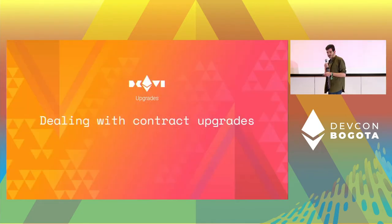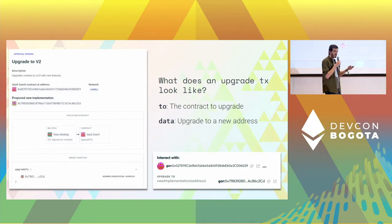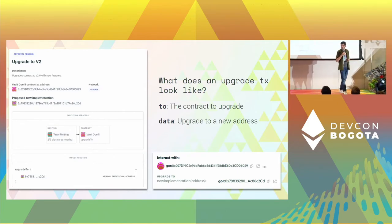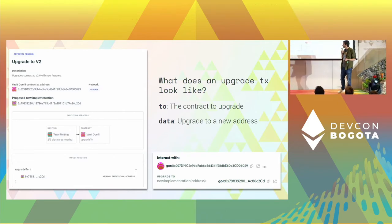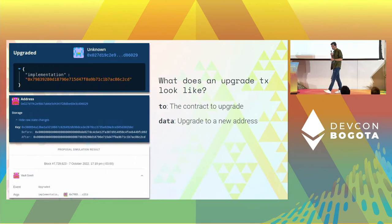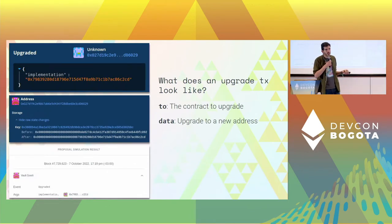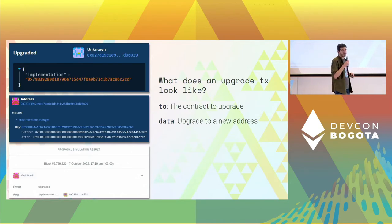Speaking of upgrades, these deserve a chapter of their own. An upgrade transaction usually looks like calling the contract and telling it to upgrade to a new address. The only information we have is literally an address. We can simulate it — the simulation will tell us that the implementation is moving to this new address — and that's all the information we have.